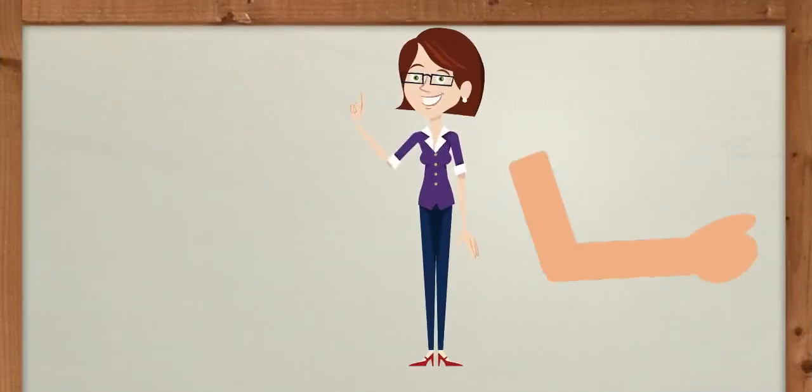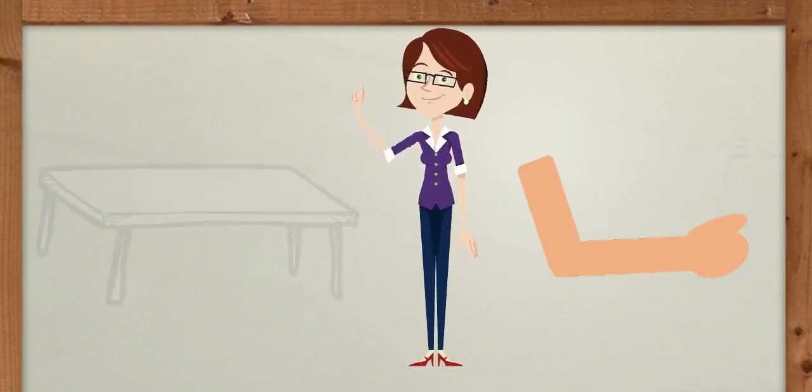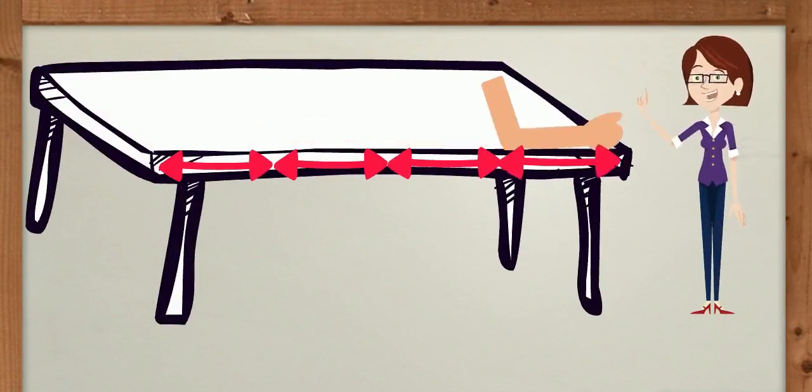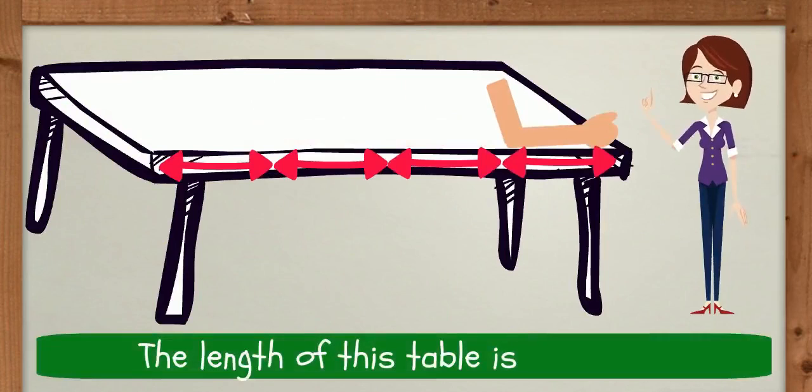With the help of cubit, let us measure the side of this table. One, two, three, four. The length of this table is four cubits.